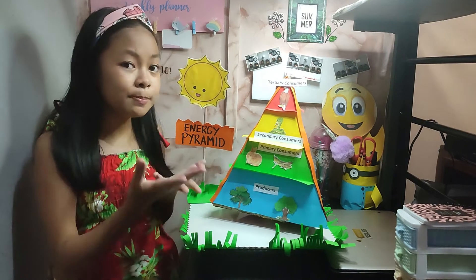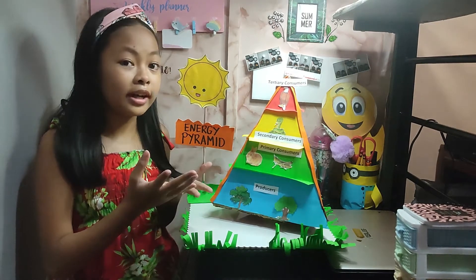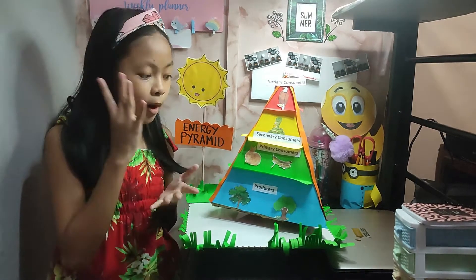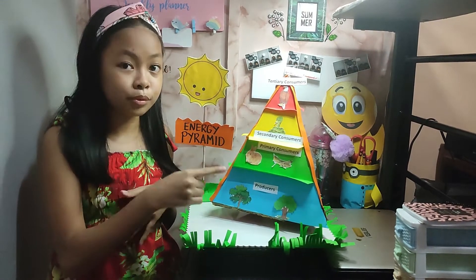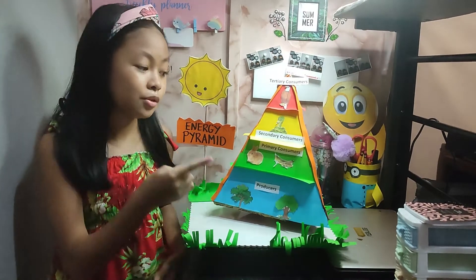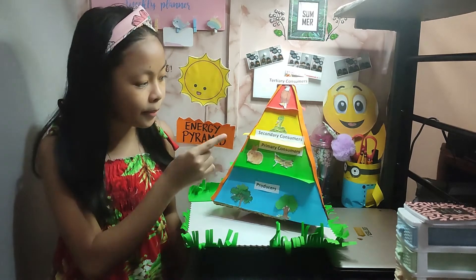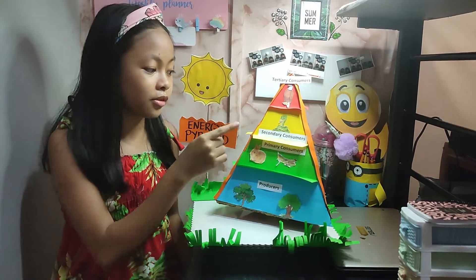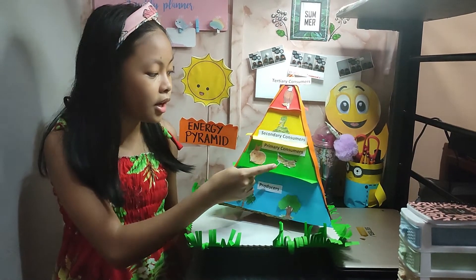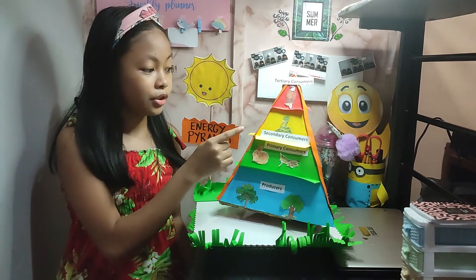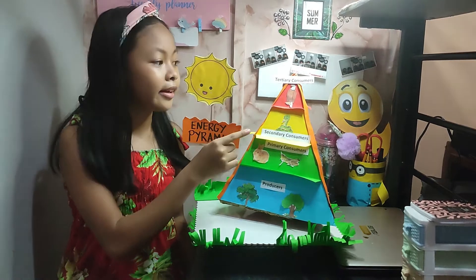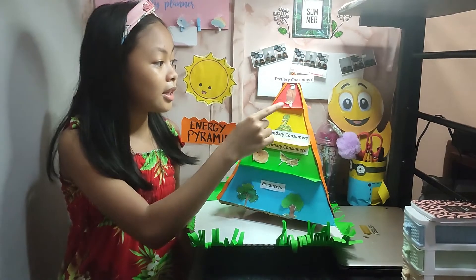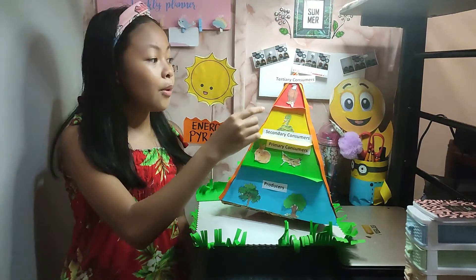This pyramid is divided into 4 parts. We have producers, which is trees. Primary consumers — rabbits and grasshoppers. Secondary consumers — snakes. Tertiary consumers — eagle.